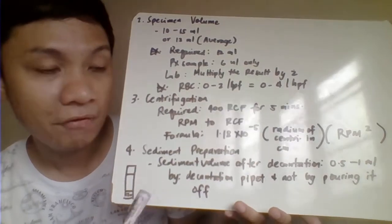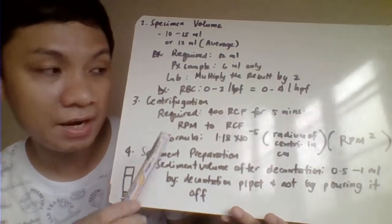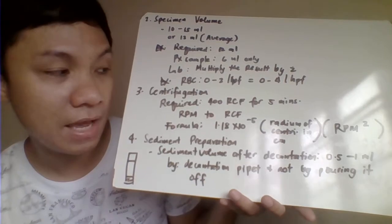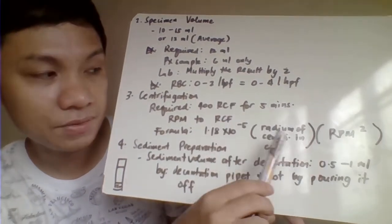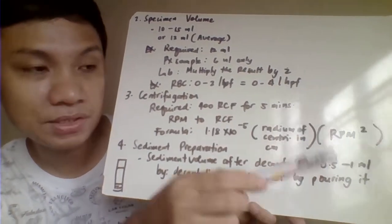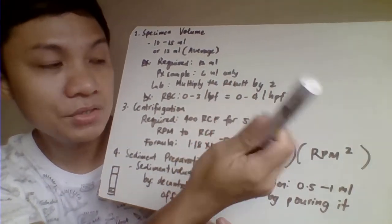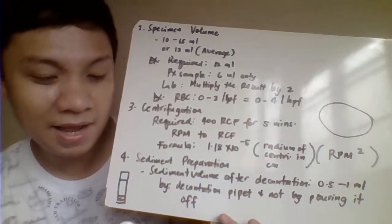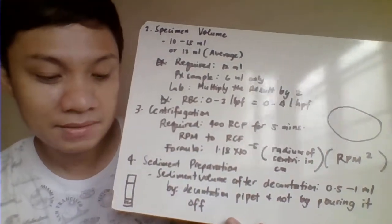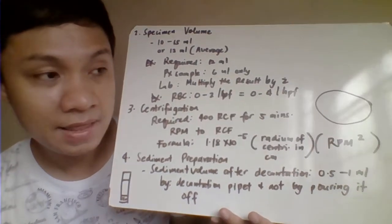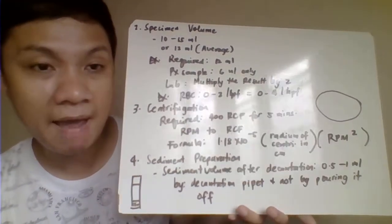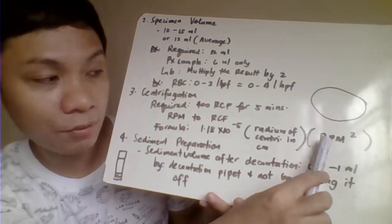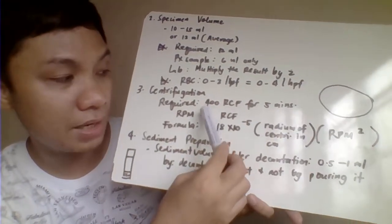There is a formula to convert RPM to RCF: 1.18 × 10⁻⁵ × the radius of the centrifuge head (in centimeters) × RPM squared. Using this formula, you can convert any RPM value to RCF.